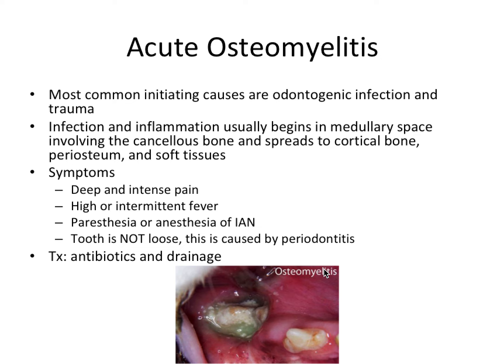The most common initiating causes of acute osteomyelitis are odontogenic infection and trauma. Infection and inflammation usually begins in the medullary space involving the cancellous bone, and then spreads later to the cortical bone, periosteum, and soft tissues. For a radiograph to show radiolucency, it needs to impact the cortical bone.